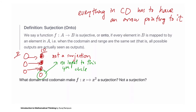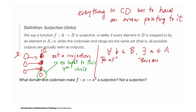To put this mathematically, using new notation: for all b in B (this symbol means 'for all'), there exists an a in A (this symbol means 'there exists') such that f(a) = b. For every element in the codomain, there exists some element in the domain such that the function maps that domain element to that codomain element.